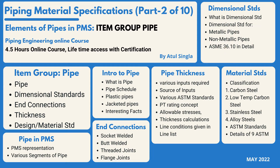We will look into one of the dimensional standards in detail so that we can understand the whole concept with respect to dimensional standards. The third section is end connections. There will be a lot of end connections with respect to pipe, so we look into each and every aspect — its application, how these are defined, and how these are represented.